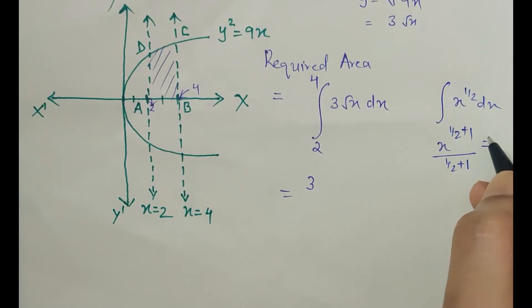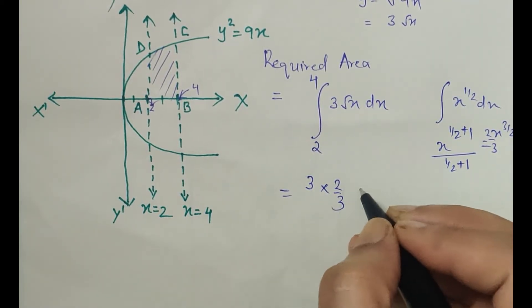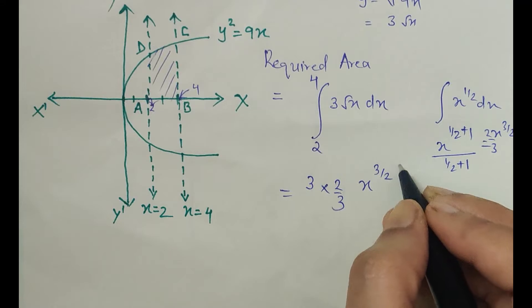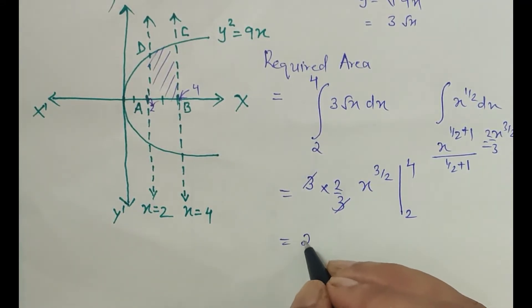What does it give? It gives x^(3/2) / (3/2), which is 2/3. So 3 × (2/3) × x^(3/2) under the limits 2 to 4. This 3 and 3 gets cancelled, we are left with 2.